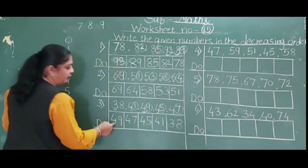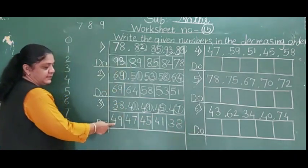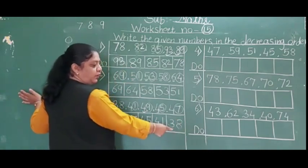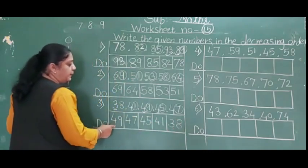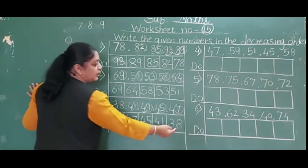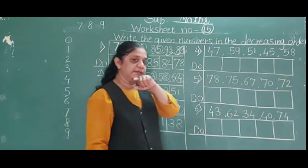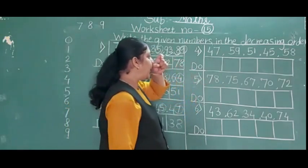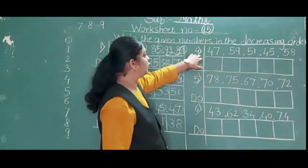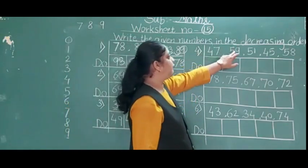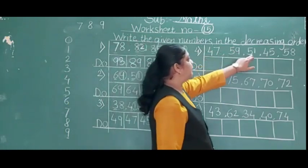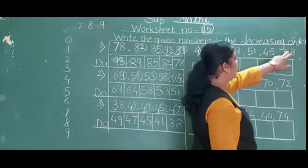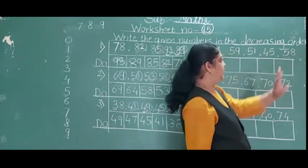See: 49 is the bigger number and 38 is the smaller number — big to small. Descending order means big to small. Fourth example: 47, 59, 51, 44 and 58.